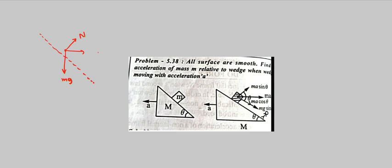Where MG is acting downward and normal reaction is perpendicular to inclined plane and pseudo force will be ma, and this is a horizontal line, so this is theta.